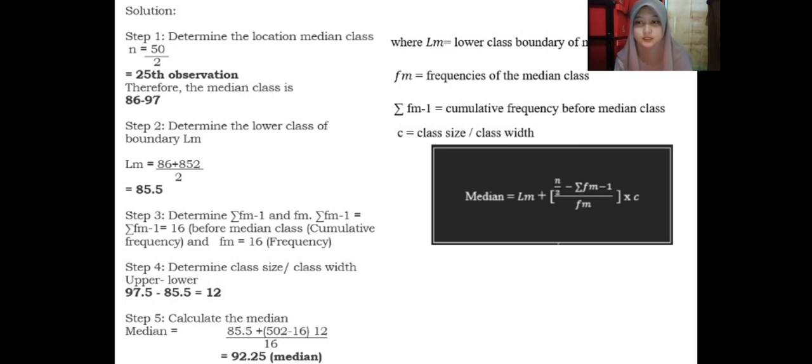Step two: determine the lower class boundary LM, we get 85.5. Step three: the frequency is 16. Step four: determine class size or class width, upper minus lower, we get 12. Step five: calculate the median, we get 92.25.